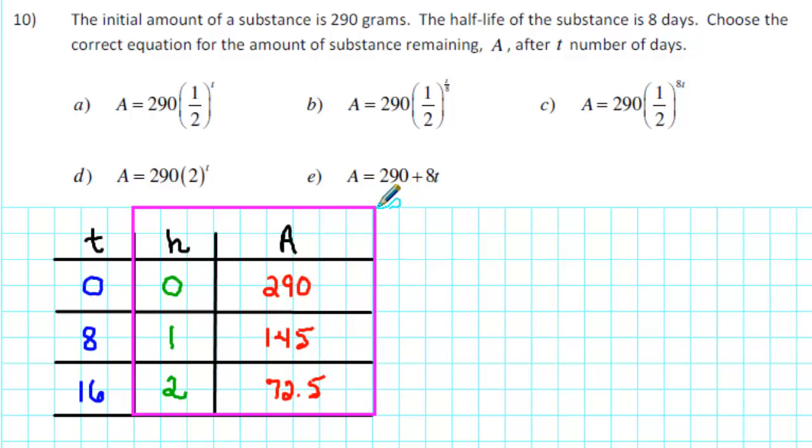Our goal is to write A as a function of T, but let's first write A as a function of H. Notice that as H goes up by 1, the A value is being cut in half. The A value is being multiplied by 1 half. That means that A is an exponential function of H.